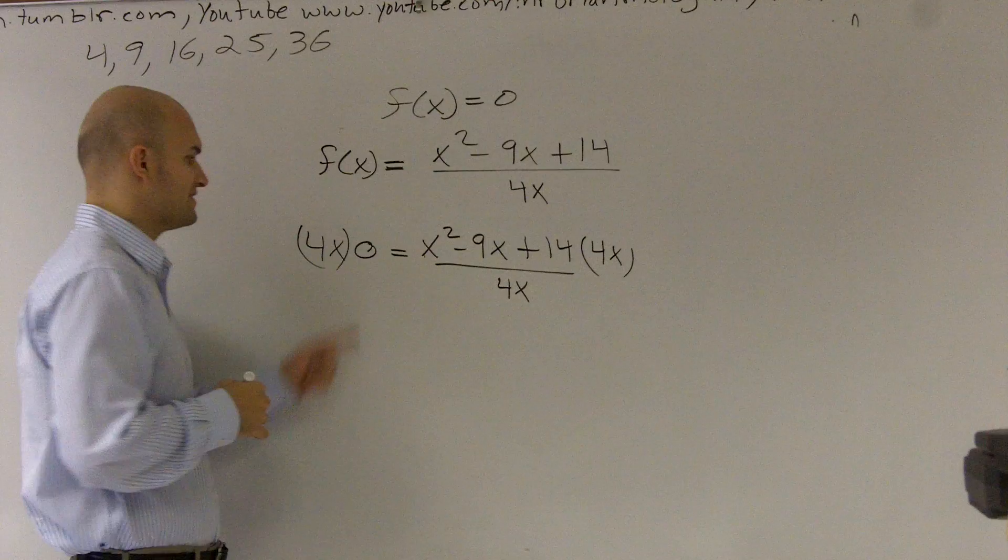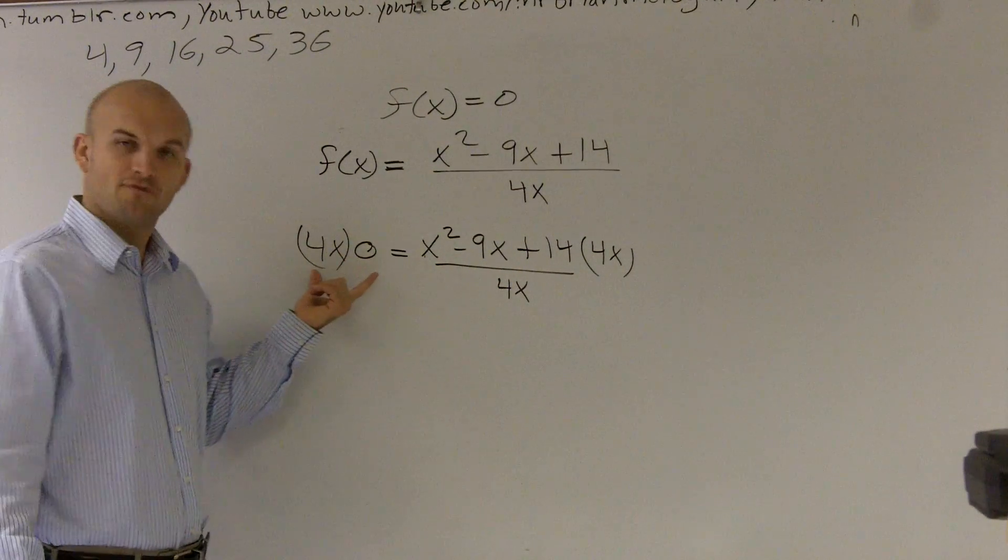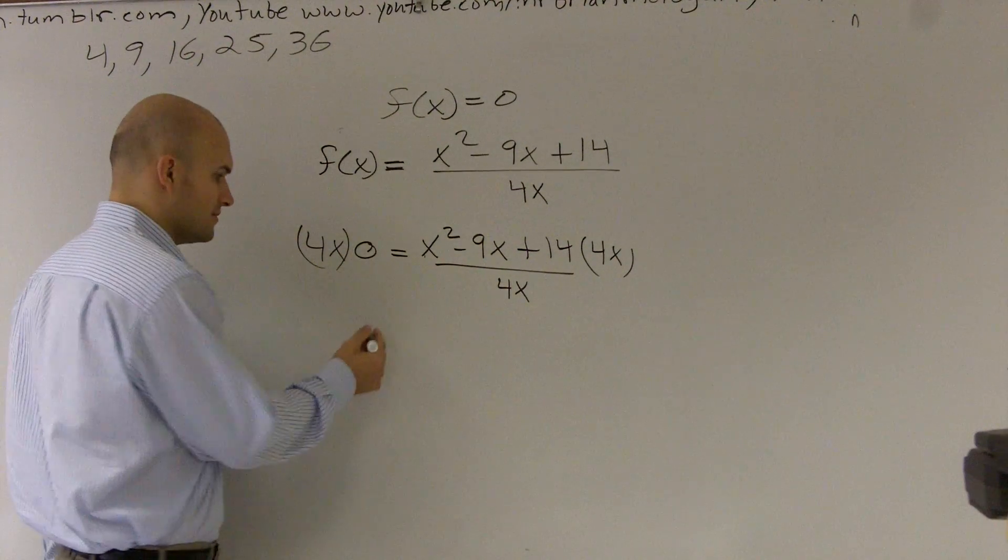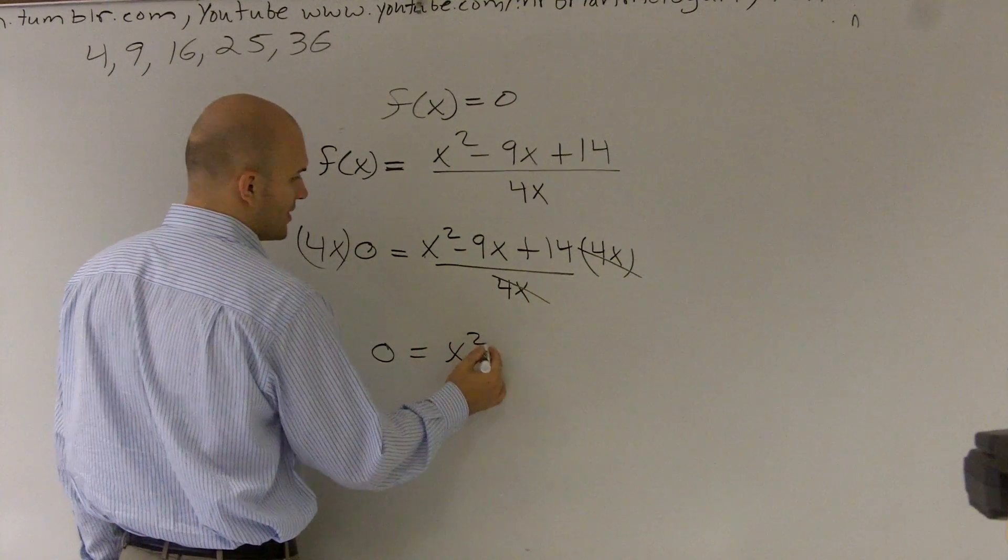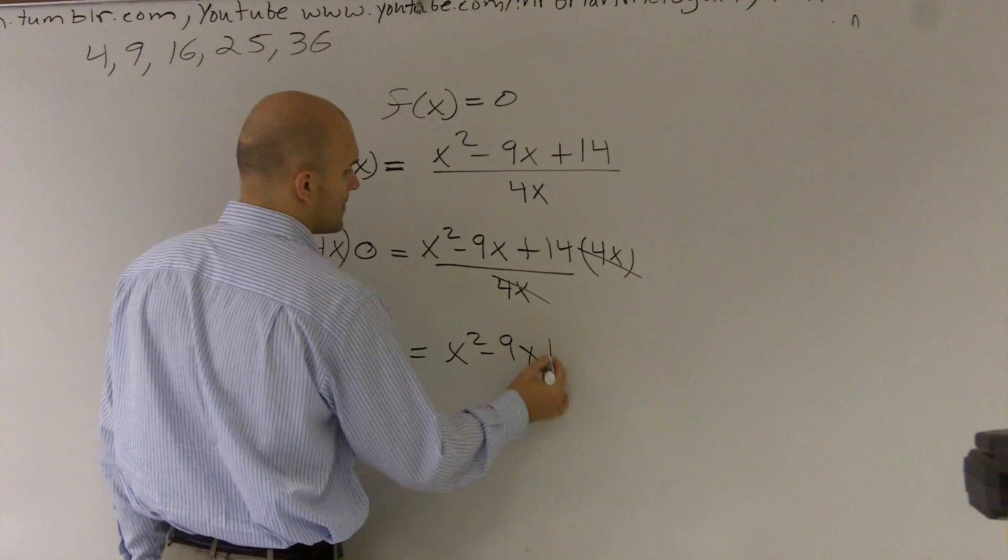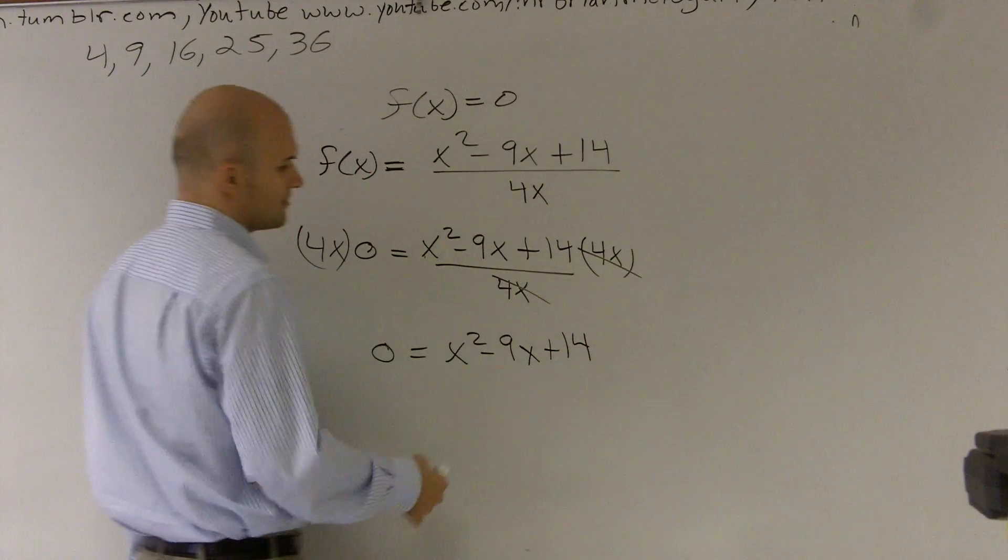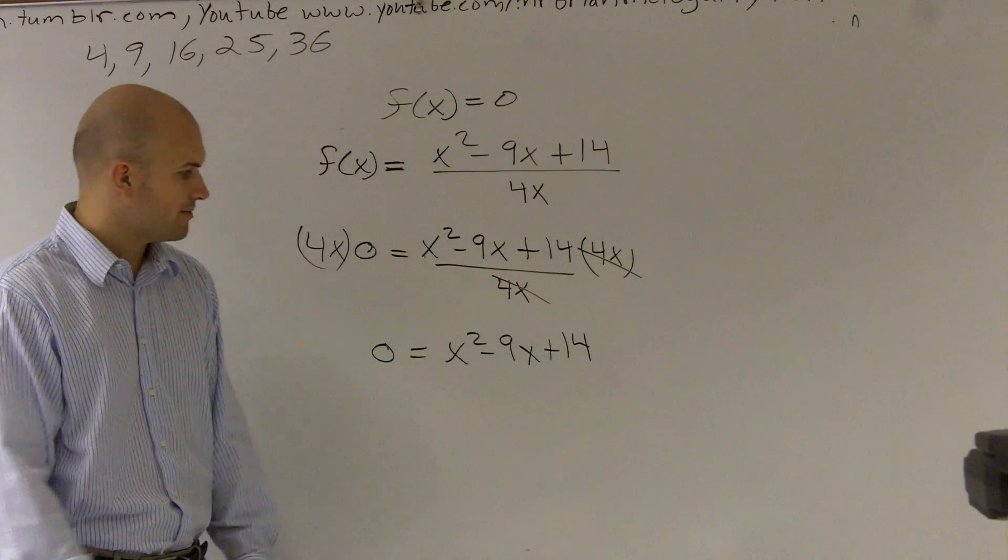And thankfully, we only have a zero on this left side. Because we know 4x times zero is going to give us zero. So we got rid of that. That cancels to one. So we're just left with x squared minus 9x plus 14. You know, you could say over 1, but we don't need to worry about it.